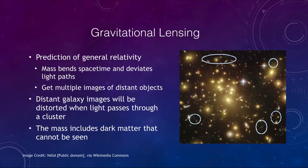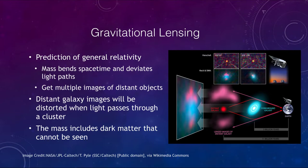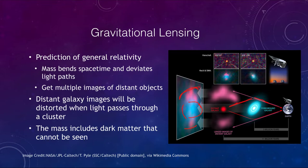Looking at how gravitational lensing works: light from a distant galaxy comes close to a foreground galaxy and gets bent around it. We then see images of the distant galaxy above and below the foreground galaxy. The number of images depends on the exact alignment — the better the alignment, the more images you get. With perfect alignment, you can actually get a ring of material around it.